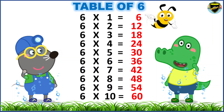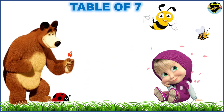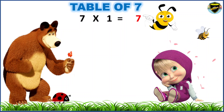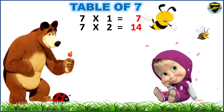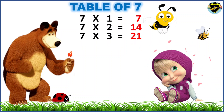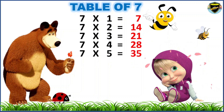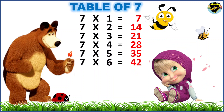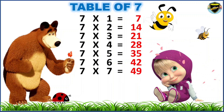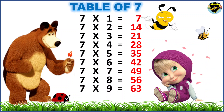Now, let's learn the table of seven. Seven ones are seven. Seven twos are fourteen. Seven threes are twenty-one. Seven fours are twenty-eight. Seven fives are thirty-five. Seven sixes are forty-two. Seven sevens are forty-nine. Seven eights are fifty-six. Seven nines are sixty-three. Seven tens are seventy.